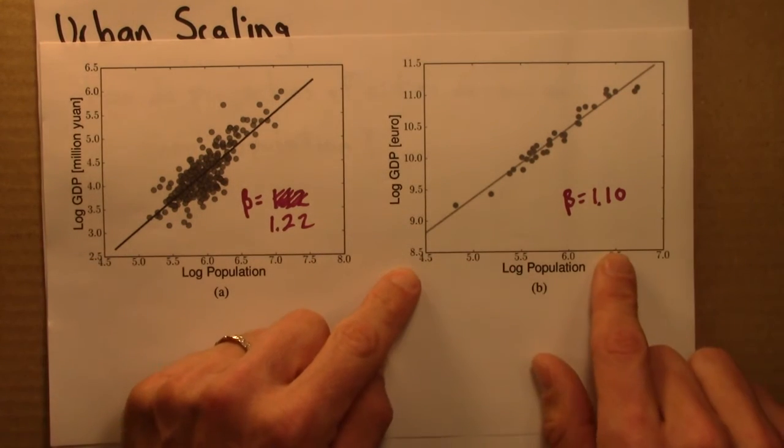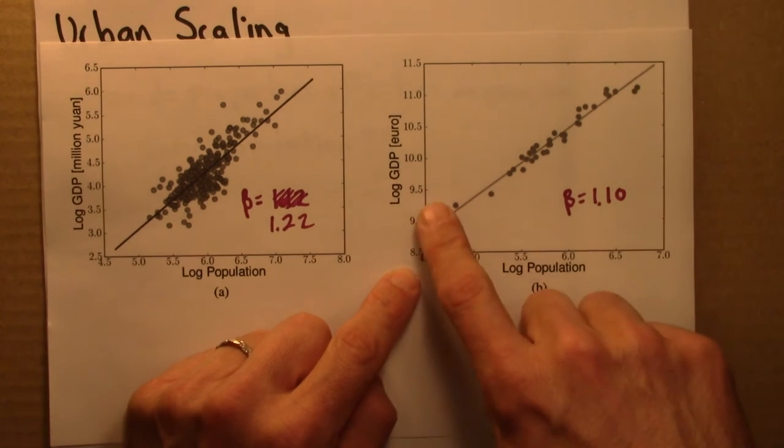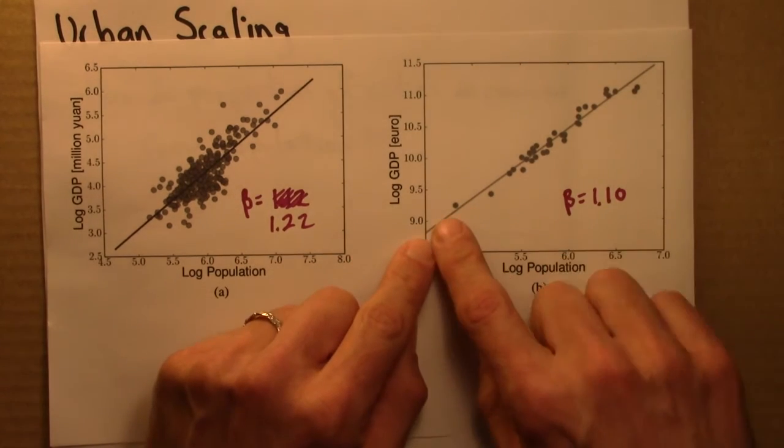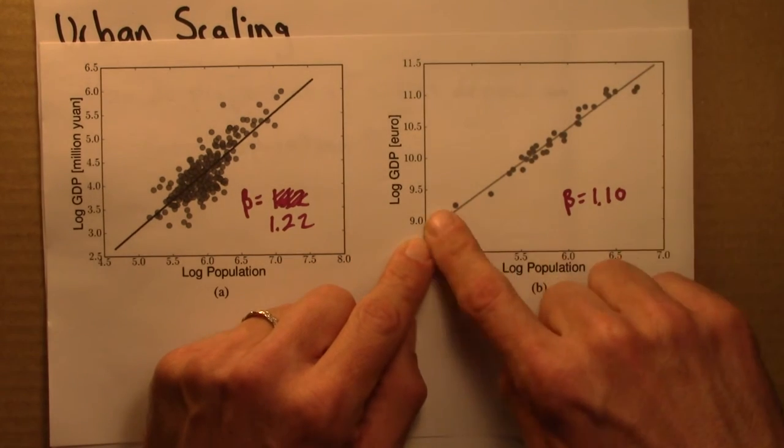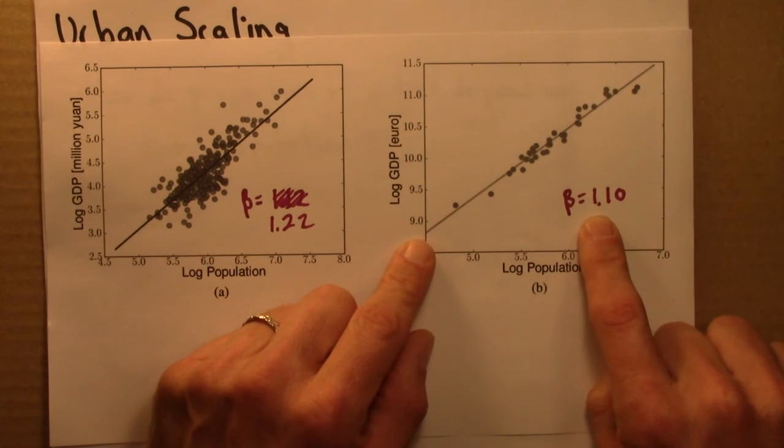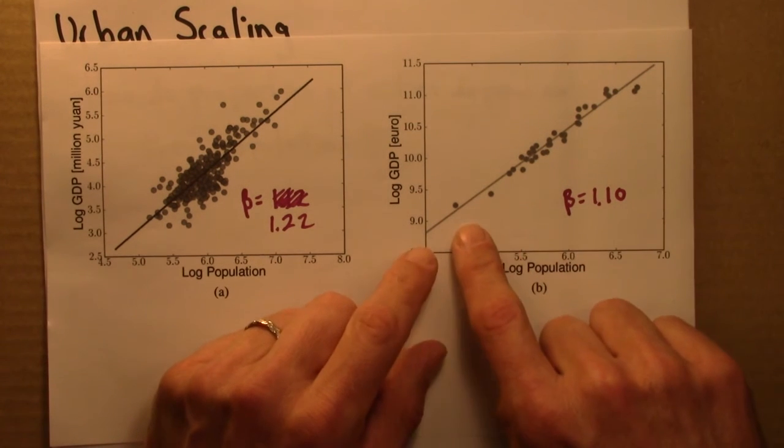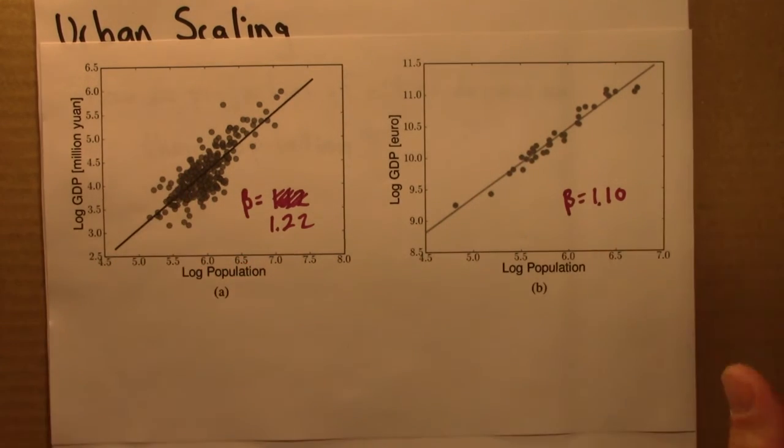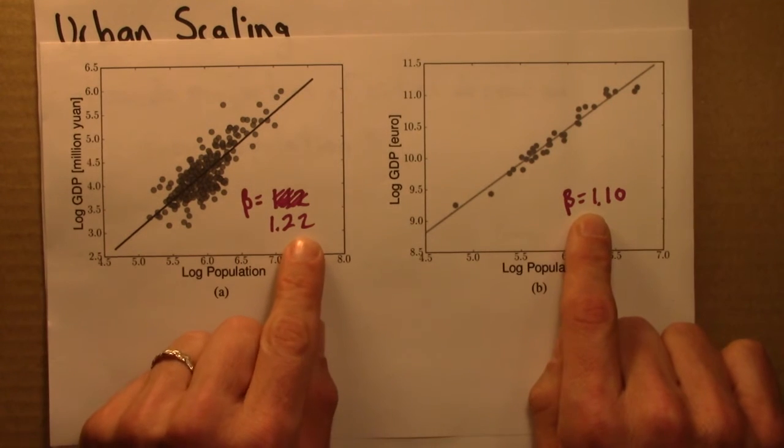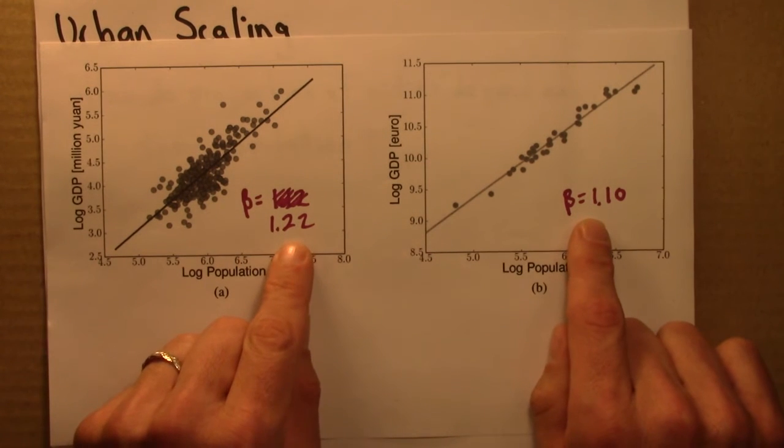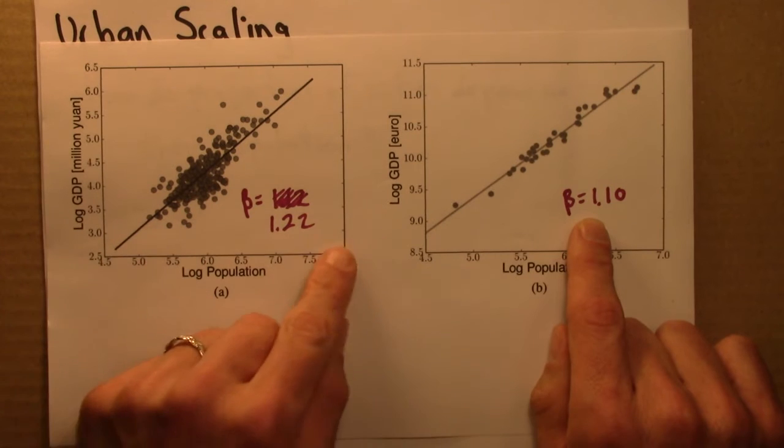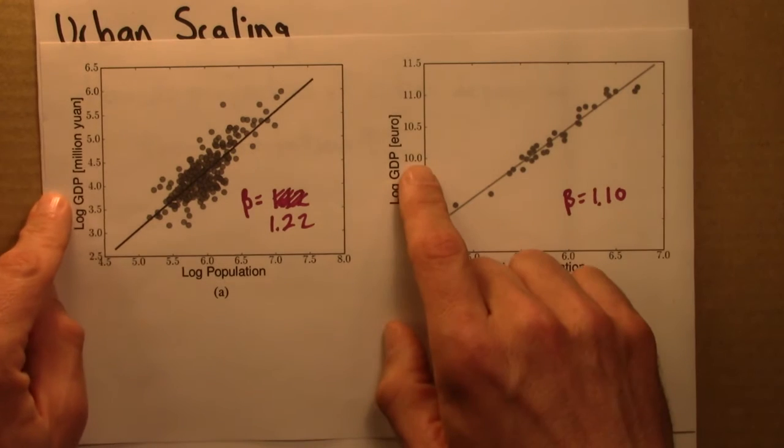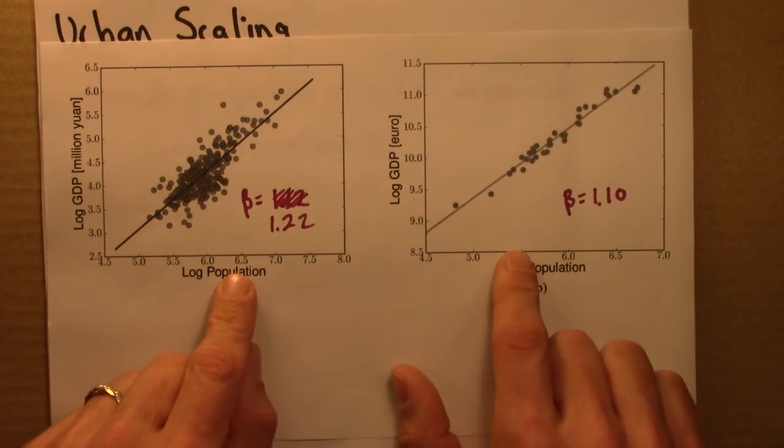This plot here is for Germany, German cities. Again, this is a log of GDP, gross domestic product, measured in euros. Very clearly a trend here. Beta in this case is 1.10. And some variation about the trend, but not as much as for China. In both cases though, this exponent is larger than 1, statistically significantly so, indicating that GDP grows faster than linearly with population.